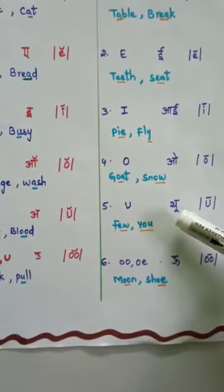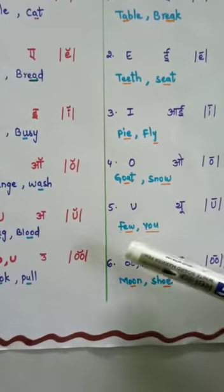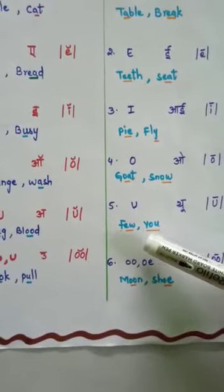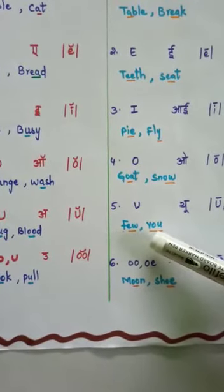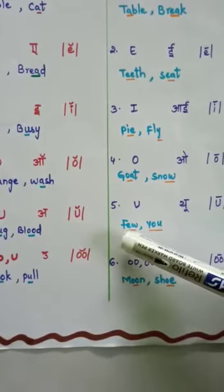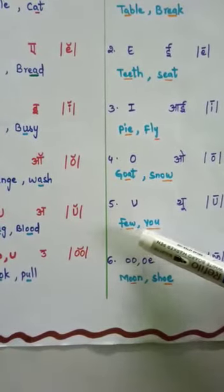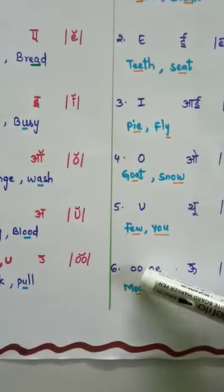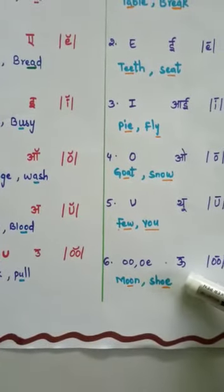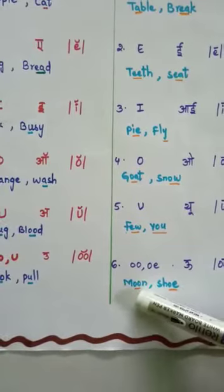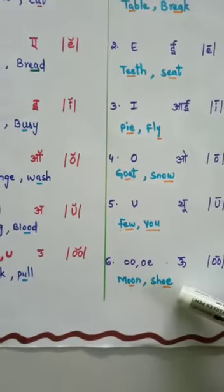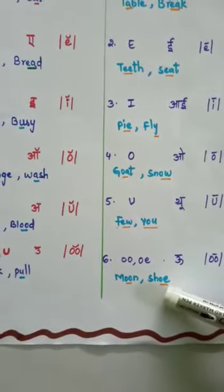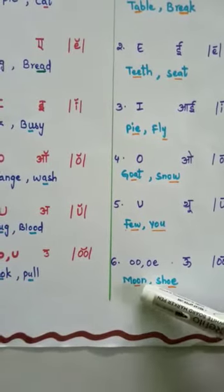Next is U. U makes the long /juː/ sound. E-W makes the sound /juː/ — few. Don't get confused, children: double O and O-E make the sound /uː/. Examples: moon and shoe. Moon has the /uː/ sound. O-E makes the sound /uː/ — shoe.